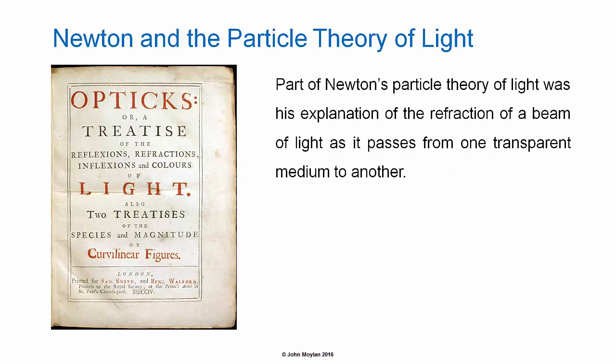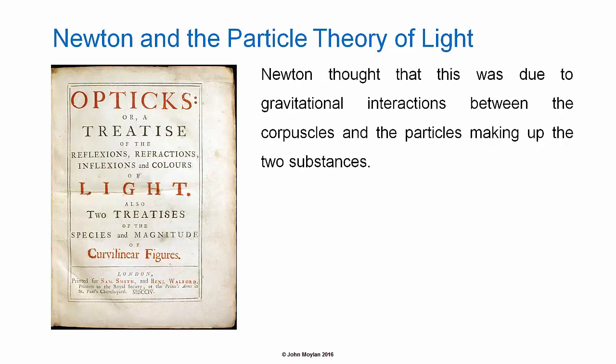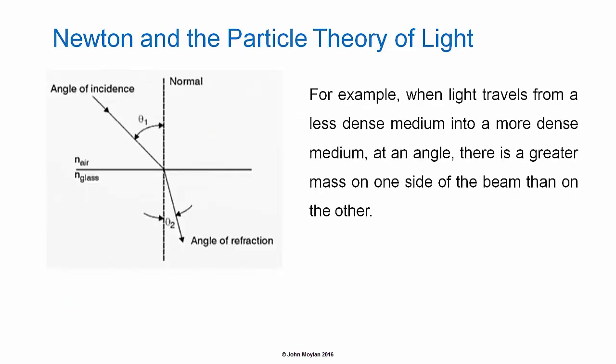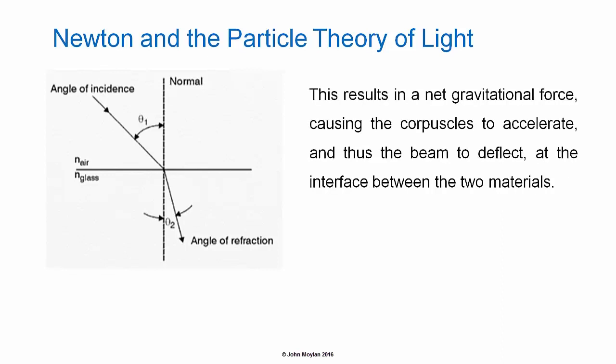Part of Newton's Particle Theory of Light was his explanation of the refraction of a beam of light as it passes from one transparent medium to another. Newton thought that this was due to gravitational interactions between the corpuscles and the particles making up the two substances. For example, when light travels from a less dense medium to a more dense medium at an angle, there is a greater mass on one side of the beam than on the other. This results in a net gravitational force causing the corpuscles to accelerate, and thus the beam to deflect at the interface between the two materials.